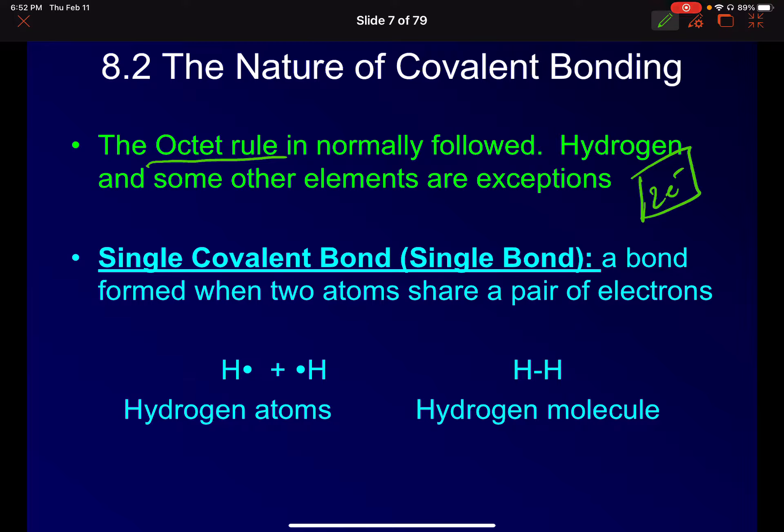So single covalent bond or a single bond is when two atoms share one pair of electrons. So I've got two individual electrons. I have two hydrogen atoms. Each has their own electron. Well, to make a hydrogen molecule, H2, they share the electrons. So this little line right here indicates two electrons. Okay. So that's a hydrogen molecule. It's the smallest. It happens to be also the element.